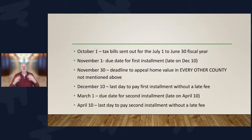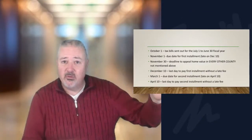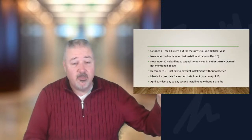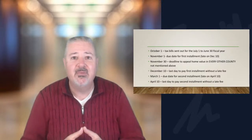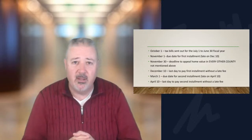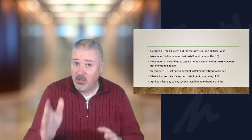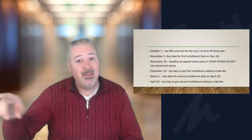November 30th is another critical date. For those not in the 10 counties mentioned, you have until November 30th to appeal your home value. The challenge we're dealing with right now is that property tax values are based on what the home was worth on January 1st. We've seen a decrease in house prices over the last nine to eleven months, yet you can't appeal based on today's value — you're appealing based on what the house was worth on January 1st.